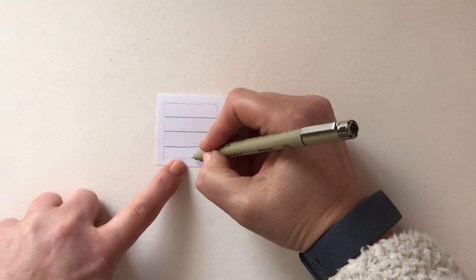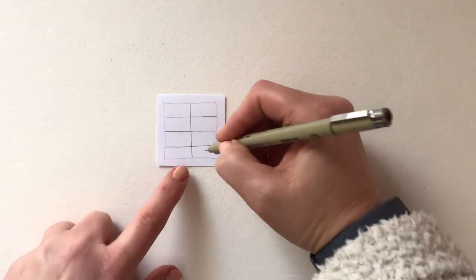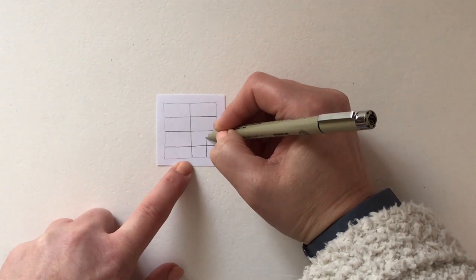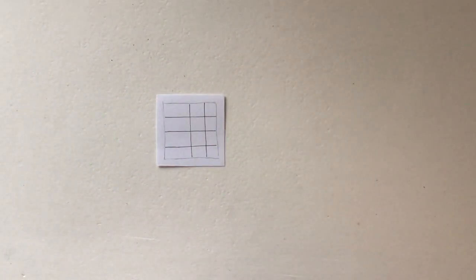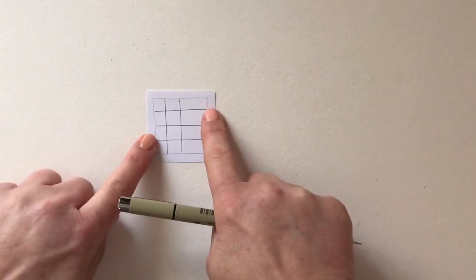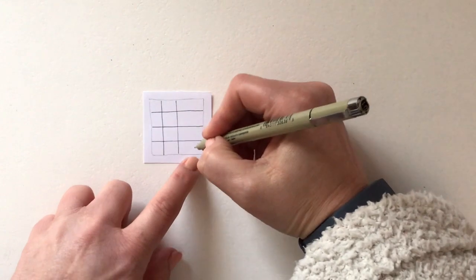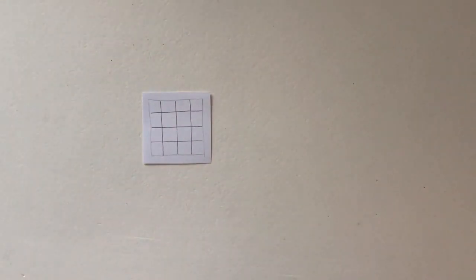I'm going to turn it to the side and I'm actually going to repeat the same again by starting off with a line in the center. Then using my eye rather than a ruler, I'm going to draw a line to the right. I'm then going to turn the tile upside down and draw another straight line. So now we've got the basic grid pattern.